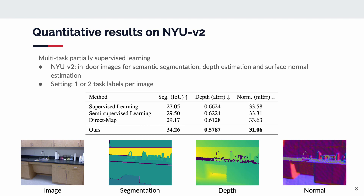We evaluate our method on three datasets under different settings. Here we show the results on the NYU v2 dataset. The dataset contains indoor images for three tasks: semantic segmentation, depth estimation, and surface normal estimation. In each image, we randomly select and keep labels for one or two tasks. From the results, we can see our method, which leverages cross-task consistency by task-agnostic joint-space learning and conditional mappings, obtains the best performance in all tasks.